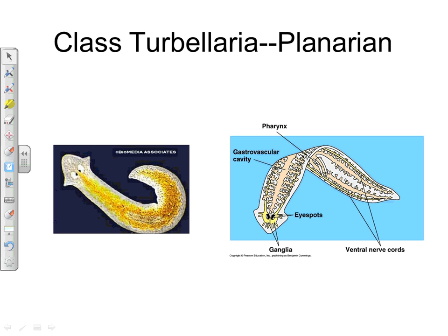The planarian is the free-living flatworm. It has eyespots that don't allow true vision but can detect light, telling the organism to move toward or away from it. Its pharynx and mouth are located on the ventral side — underneath its body — and this tube can be extended to take in food. The planarian also has ganglia near the head, which are concentrations of nerves acting as a primitive brain, showing some cephalization with sense organs in the head region.